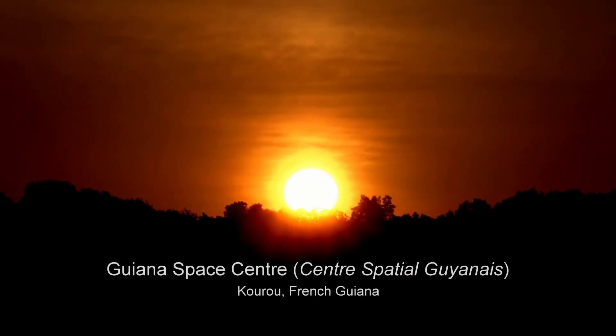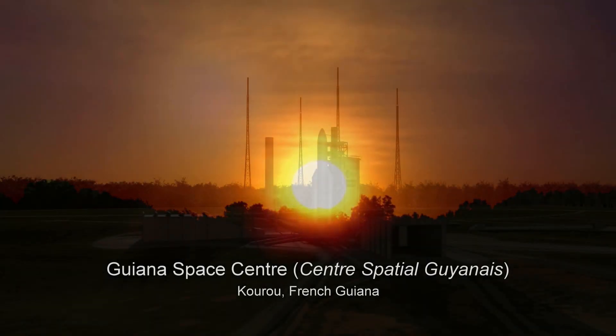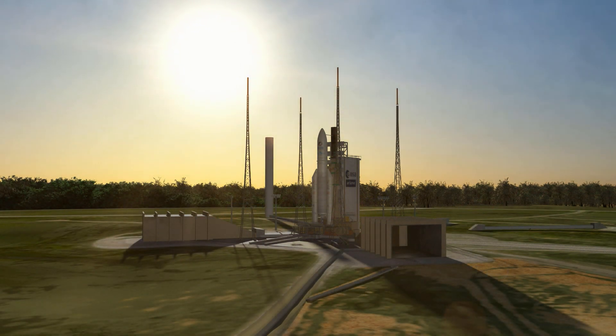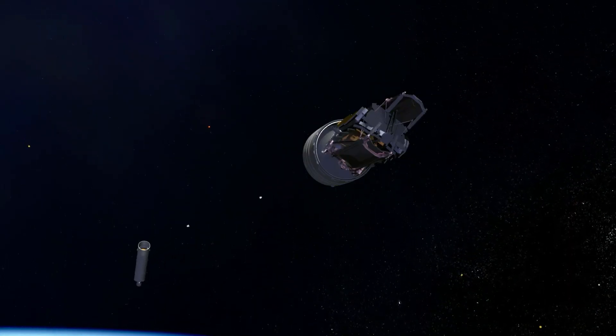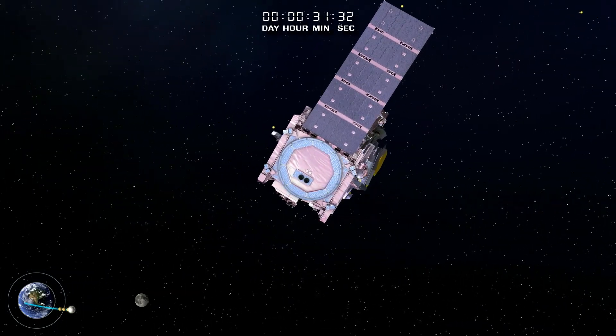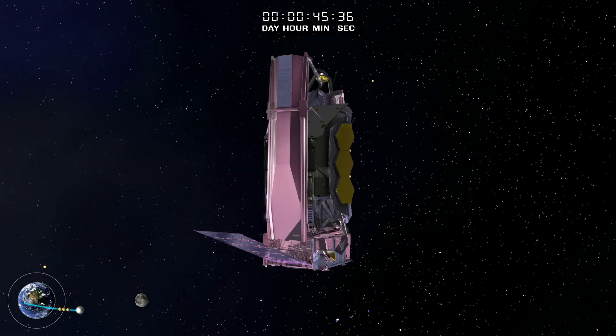Webb will launch from the Guiana Space Center in South America on December 24, 2021, at 7:20 a.m. EST. After 27 minutes, the telescope will separate from the launch vehicle. Solar arrays will deploy after 31 minutes, letting Webb generate its own electricity.